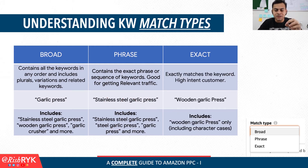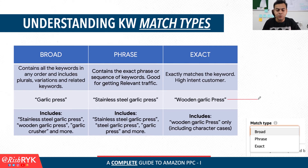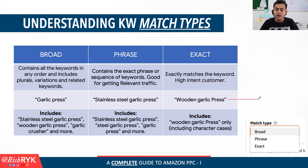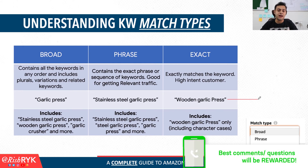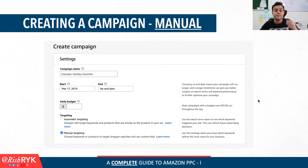The third type of match type is called exact, and that's exactly what it means. If you set your keyword match type to exact for a keyword — for example, let's say your keyword was 'wooden garlic press' and you set it to exact match type — then your product would only show up when somebody searches for 'wooden garlic press' and nothing else. So those are the three match types that you really need to understand before you start your manual campaigns.